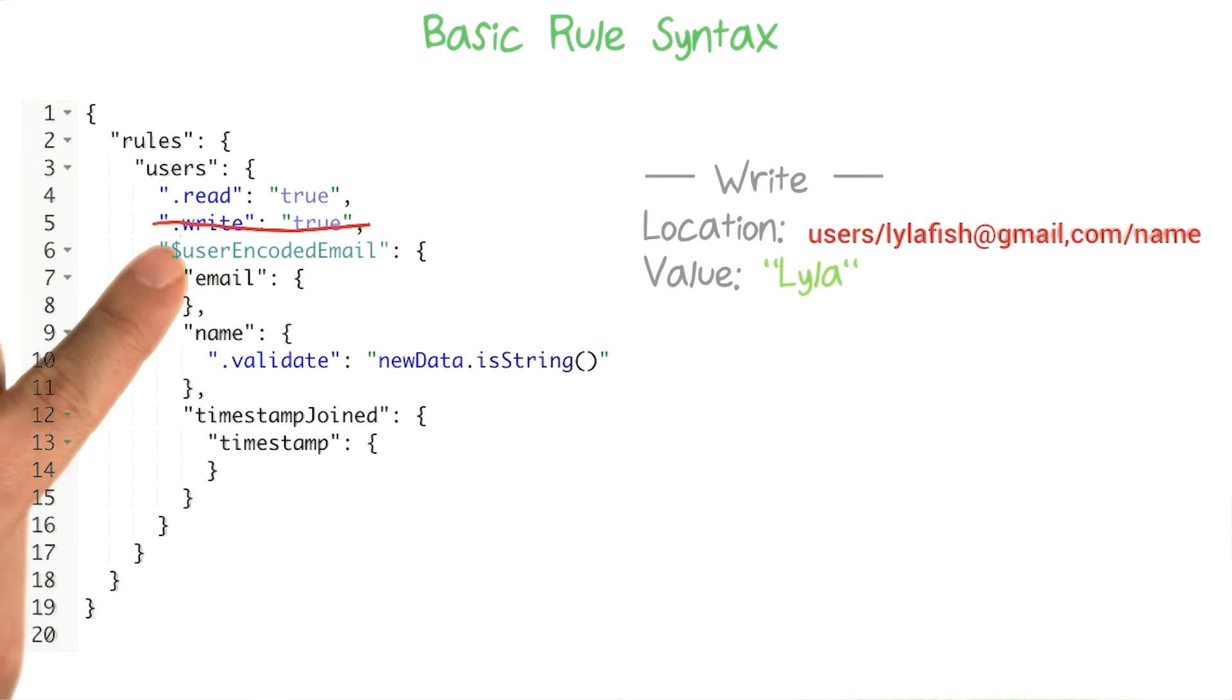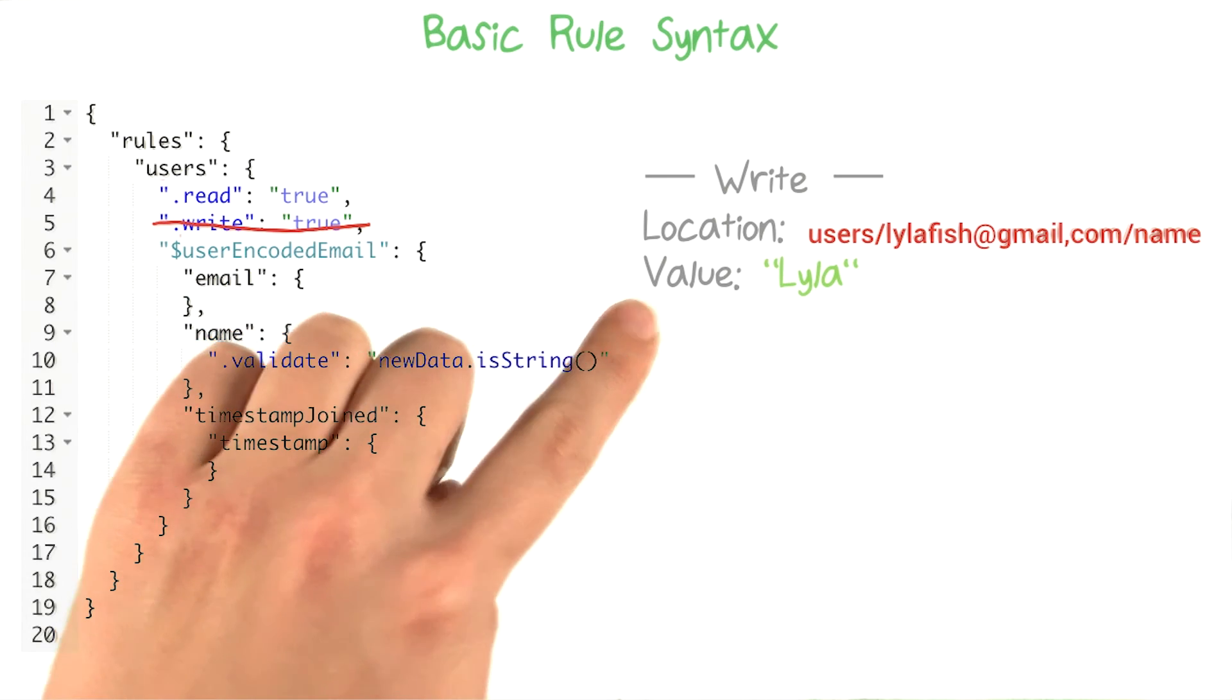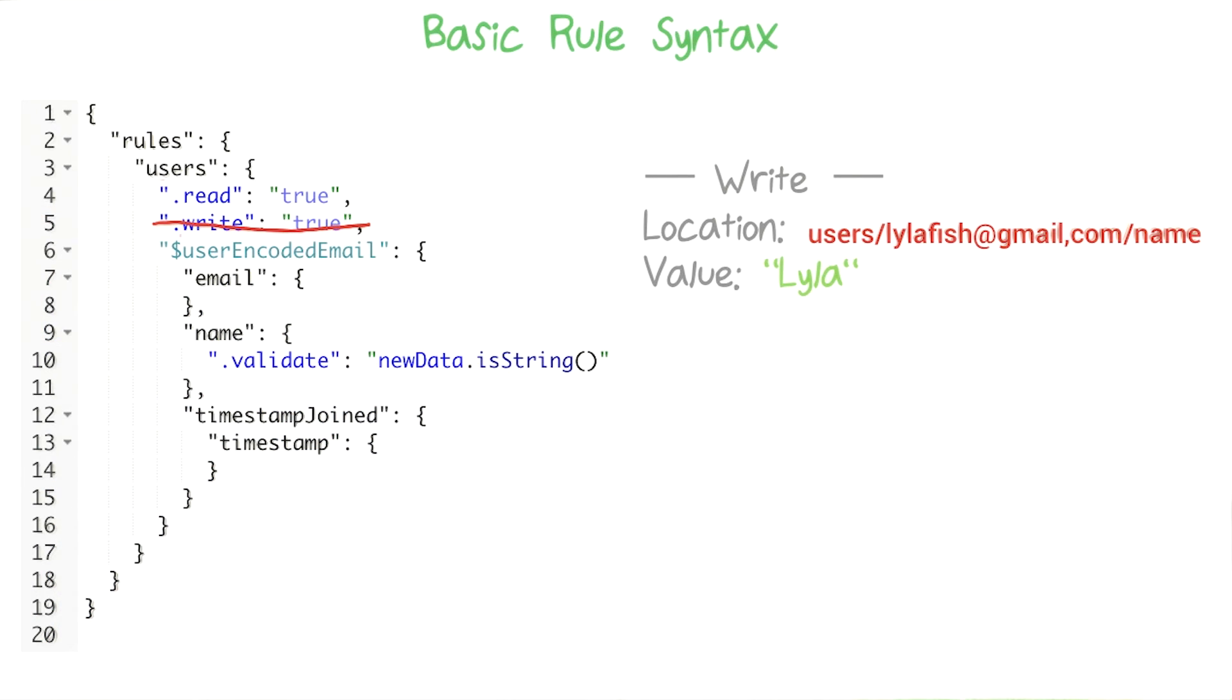Now, let's pretend that this write rule wasn't here. This was actually the rule that was giving me the ability to write to this location. So if you ever tried to do something like that, where you don't have permission to do the action that you want to do, the uncancelled callback method will be triggered in your code. And it'll be given a Firebase error of type permission denied.